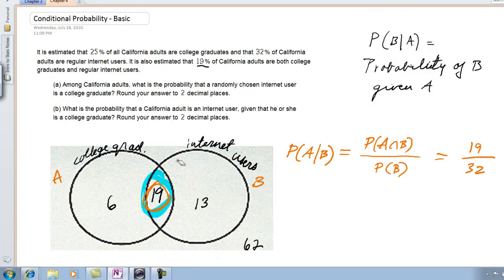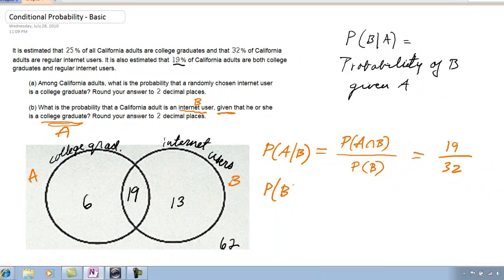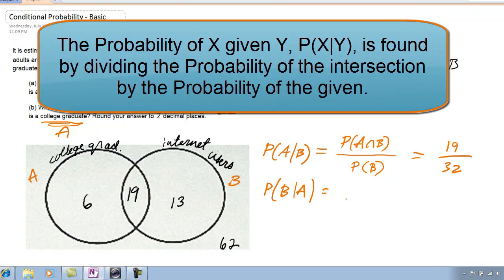Let's answer part B. What is the probability that a California adult is an internet user, given that he or she is a college graduate? So they're giving us A and want to know B — that is P(B|A). We do P of the intersection divided by P of that region by itself, so P of A on the bottom. It's 19 divided by 25, because 25% are inside the college graduates circle. 19 divided by 25 is 0.76.